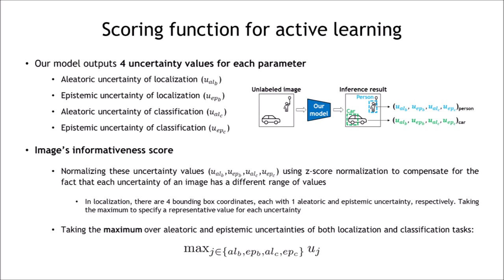In localization, there are four bounding box coordinates, each with one aleatoric and epistemic uncertainty, respectively. We take the maximum to specify a representative value for each uncertainty. Finally, we use maximum value among the four uncertainties of all objects as final image informativeness score.